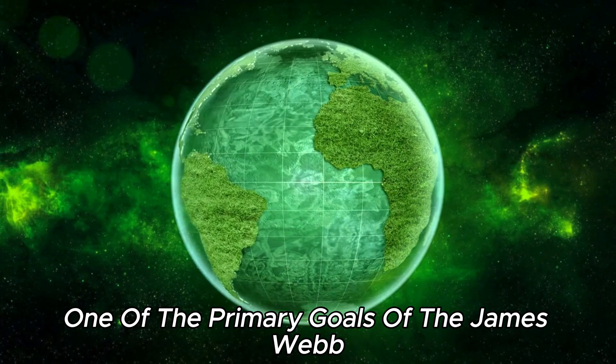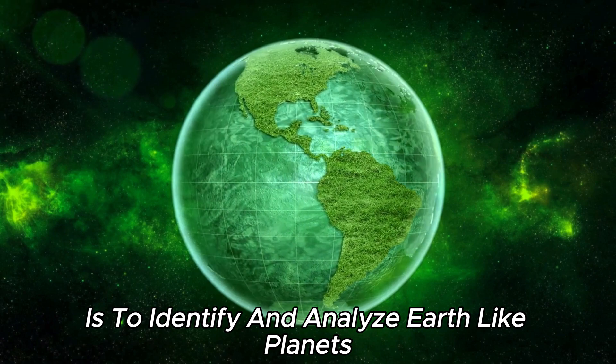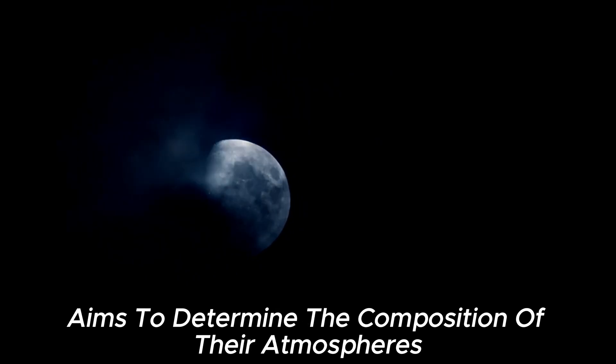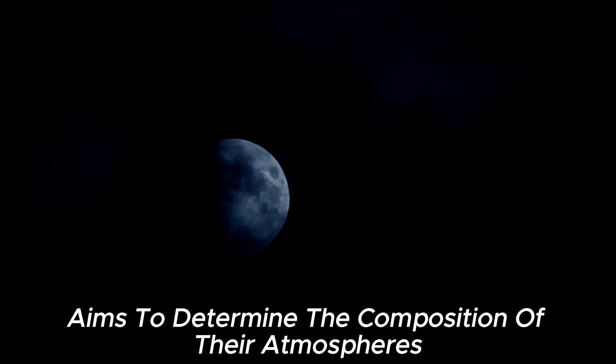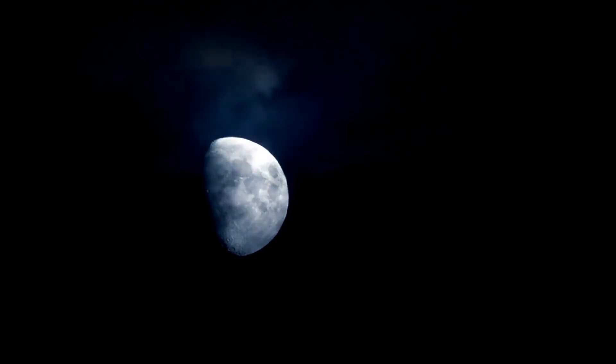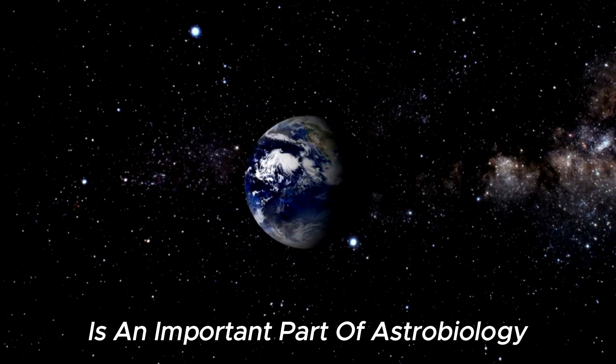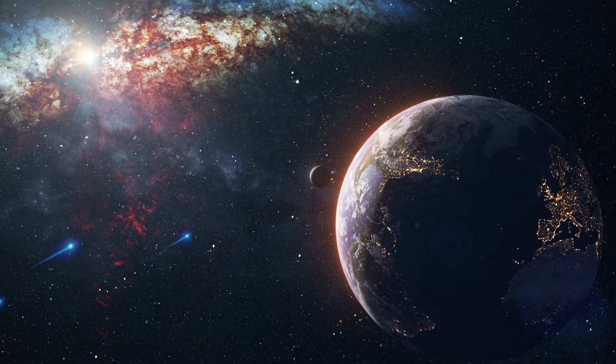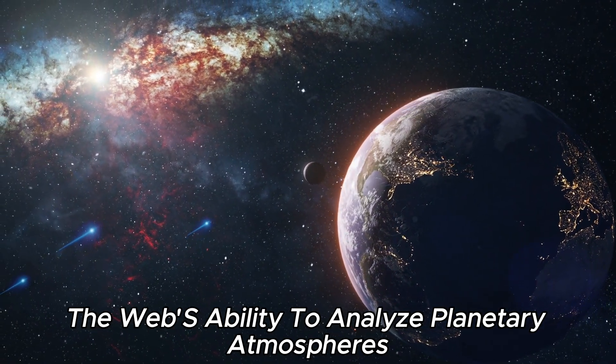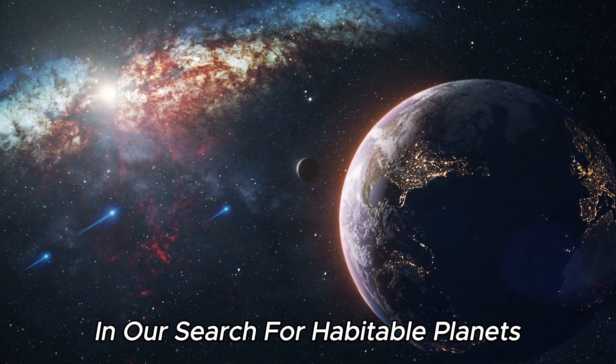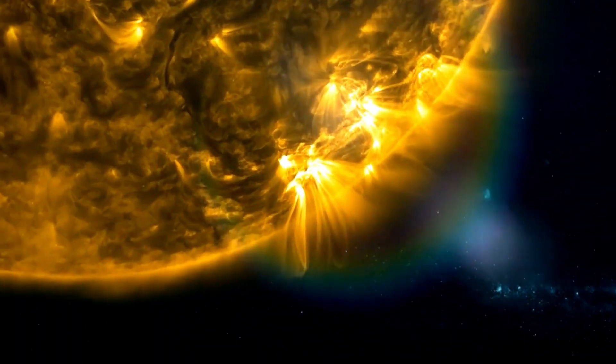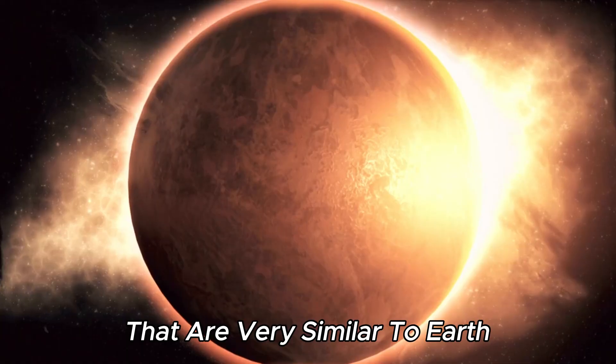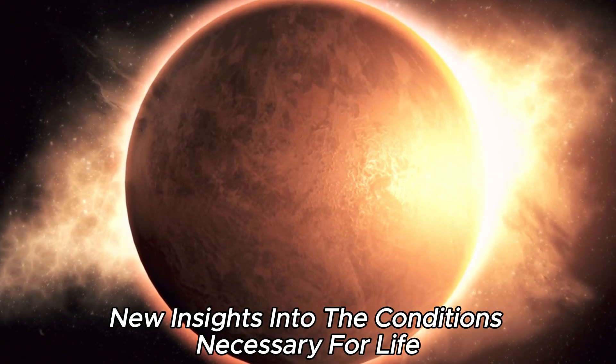One of the primary goals of the James Webb Space Telescope is to identify and analyze Earth-like planets. By studying the light from these distant worlds, Webb aims to determine the composition of their atmospheres and assess their ability to support life. This search for Earth-like planets is an important part of astrobiology and our quest to find out if life exists outside our solar system. The Webb's ability to analyze planetary atmospheres in such detail represents a major advance in our search for habitable planets. As the telescope's observations continue, he promises to find planets that are very similar to Earth and could provide new insights into the conditions necessary for life.